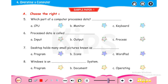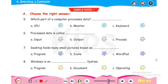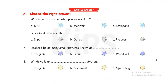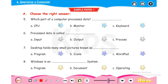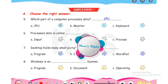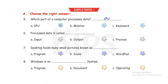Fifth one: which part of the computer processes data? The answer is CPU. With the help of the CPU we can process the data. With the help of the monitor we can see the output, and with the help of the keyboard we can give input to the processor.